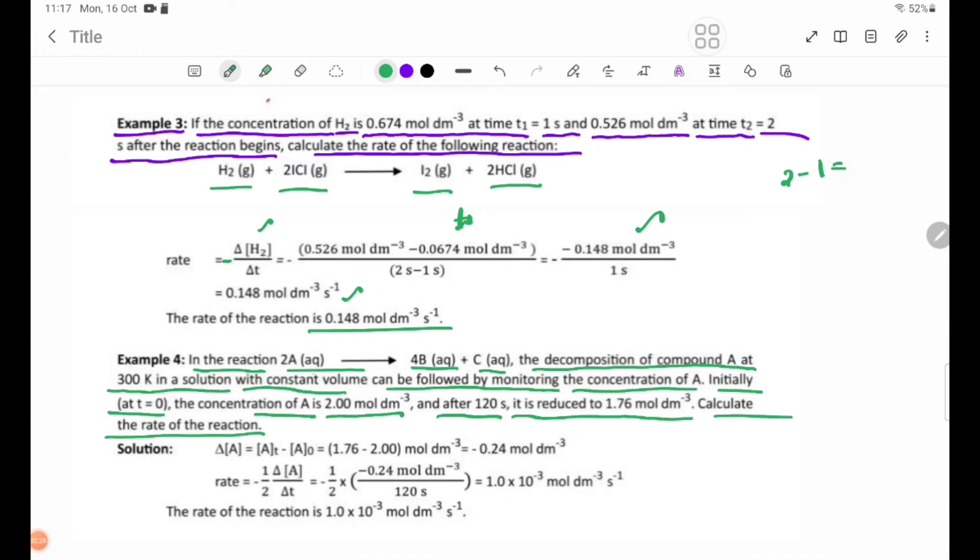Solution: Δ[A] = (1.76 - 2.00) mol/dm³ = -0.24 mol/dm³. Δt = 120 seconds. Rate = -1/2 × Δ[A]/Δt.